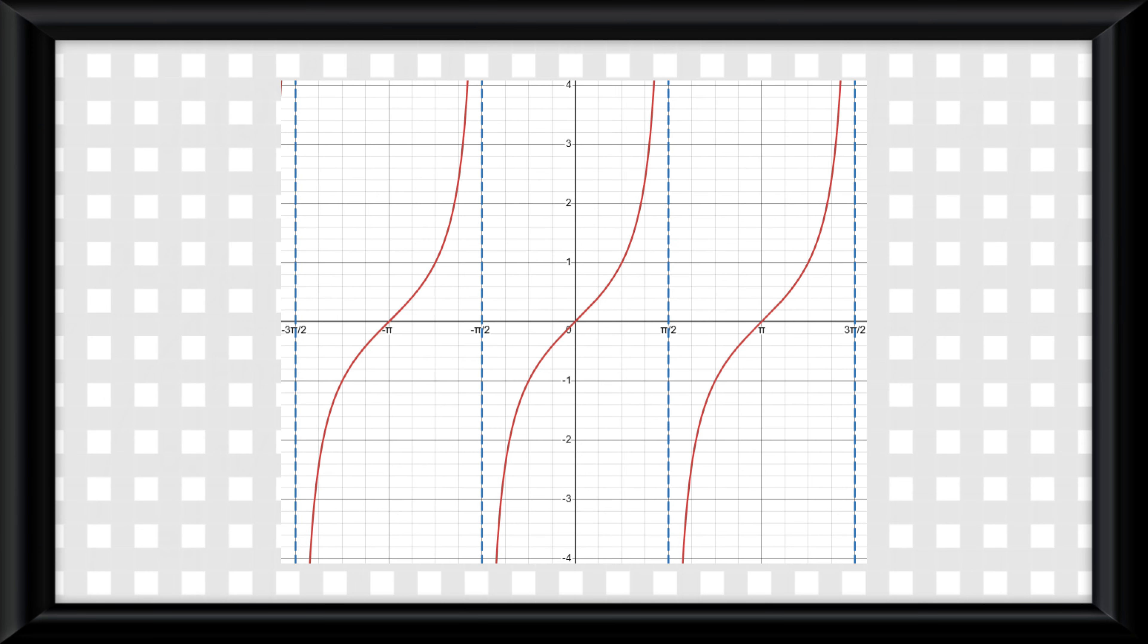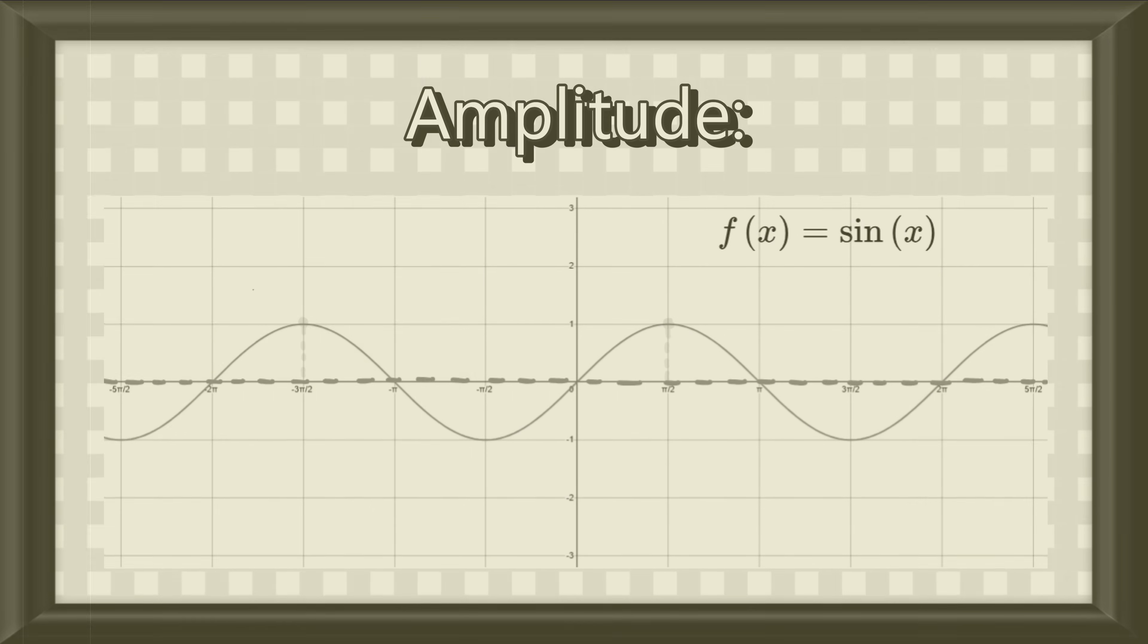And now that gets us to a. You'll notice on the tangent graph that it goes to positive and negative infinity. Since the amplitude is the distance from the midline to the maximum, what the heck is the amplitude now?